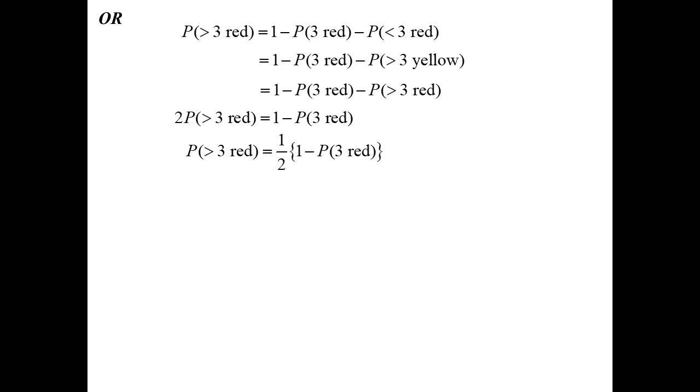Well, that's one minus the probability of three of them being red, because we want more than, but also probability less than three red. But that's going to be the same as probability of three red, but probability of greater than three yellow. Because if I have less than three red, I must have more than three yellow. But more than three yellow must be the same as more than three red because they're equally likely. I can create now an equation. I can create an equation where I'm going to move the probability of greater than three red to the left hand side, and I get two lots of that is one minus the probability of three red. Divide both sides by two, so one minus what we worked out before, and we get the answer 0.32.